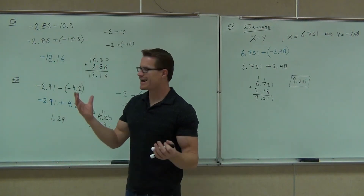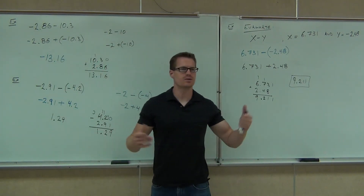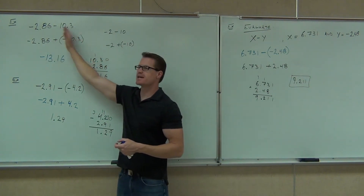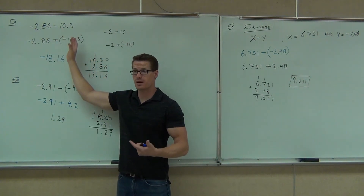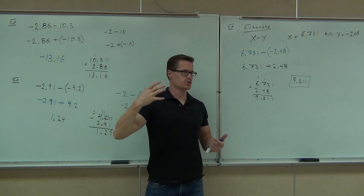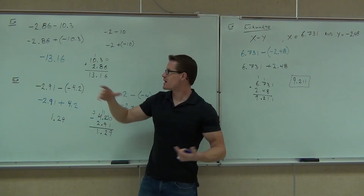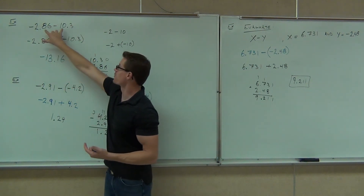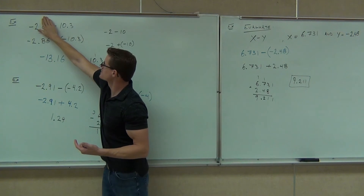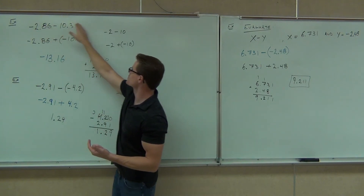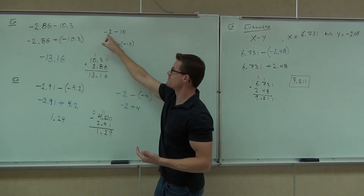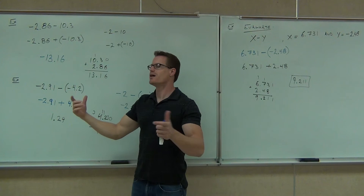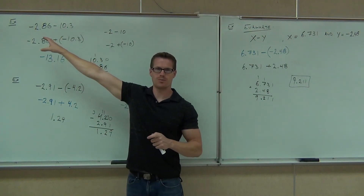If you get stuck on a problem, translate it into something you do know. Just take off the decimal places temporarily to give your mind an idea of what you're doing. Sometimes this gets very confusing with all those numbers. But if you think of negative 0.86 and negative 0.3 as just negative 2 minus 10, sometimes that will jog your memory — then do the same exact thing on that problem.